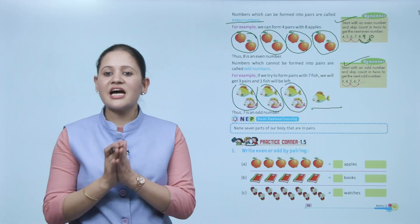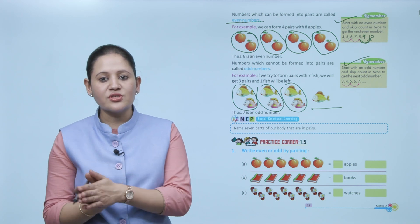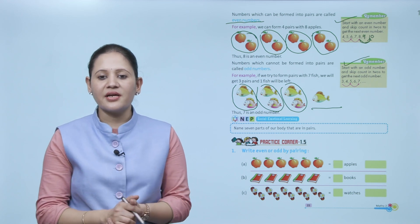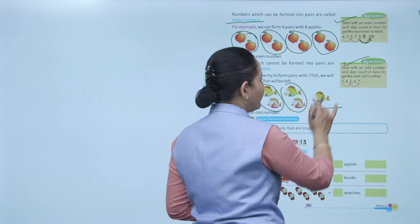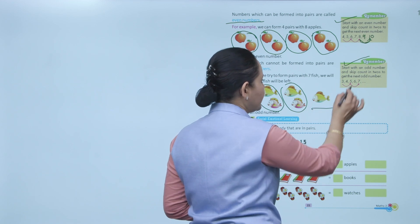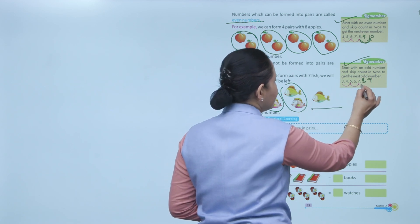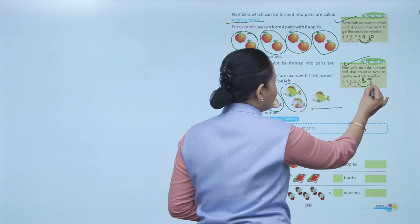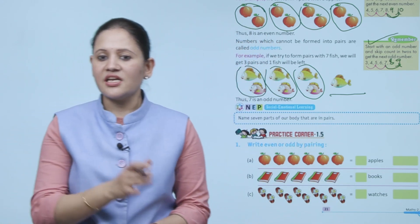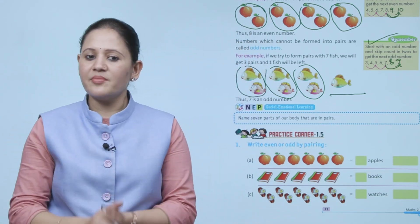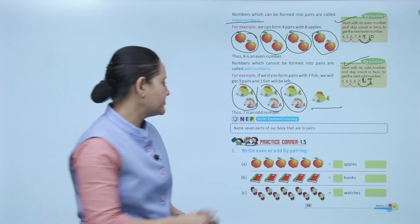Remember: start with an odd number and skip count in twos to get the next odd number — 3, skip 4, get 5; skip 6, get 7; skip 8, get 9. Like this, we can find the next odd numbers.